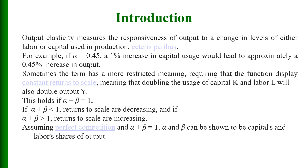Output elasticity measures the responsiveness of output to a change in levels of either labor or capital, other things remaining the same. For example, if alpha equals 0.45, a 1% increase in capital usage would lead to approximately a 0.5% increase in output. If alpha plus beta equals 1, the function displays constant returns to scale — doubling inputs doubles output. If alpha plus beta is less than 1, returns to scale are decreasing; if greater than 1, returns to scale are increasing.